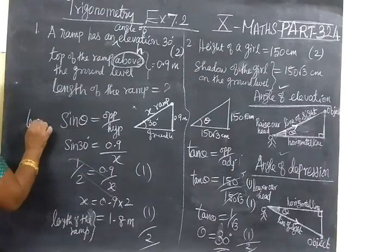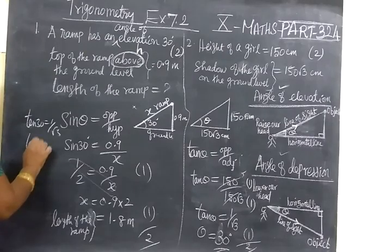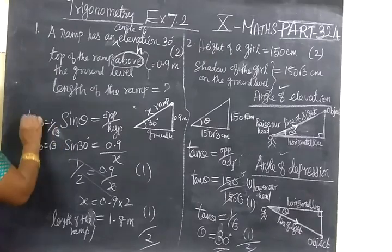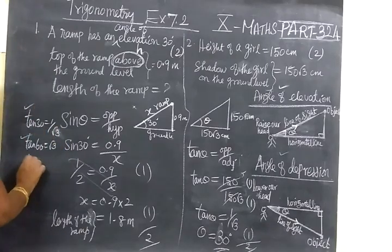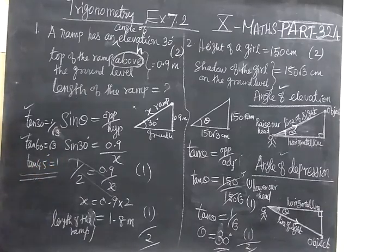And we know tan 30 equals 1 by root 3, tan 60 equals root 3. So throughout this exercise, tan 30, tan 60, tan 45 - this trigonometric ratio is very useful and we are using this exercise. Thank you.